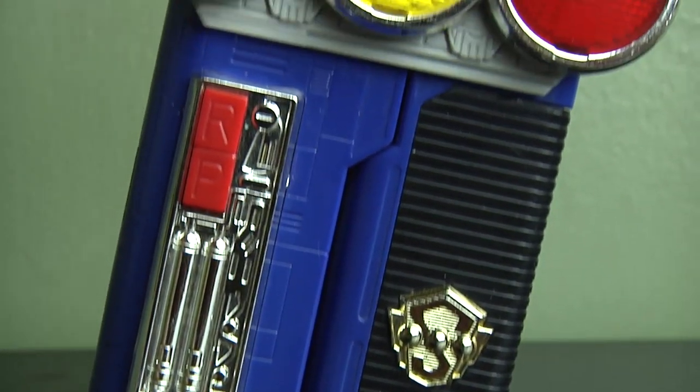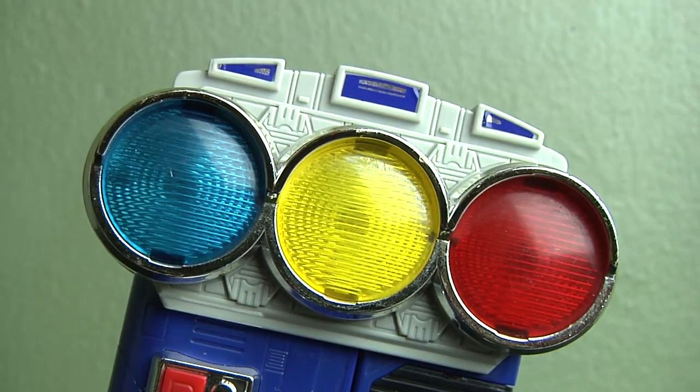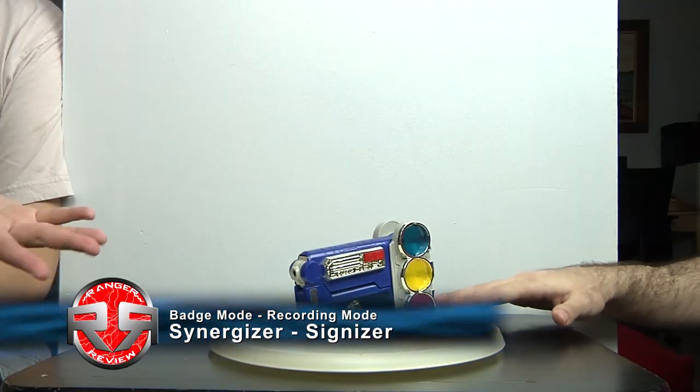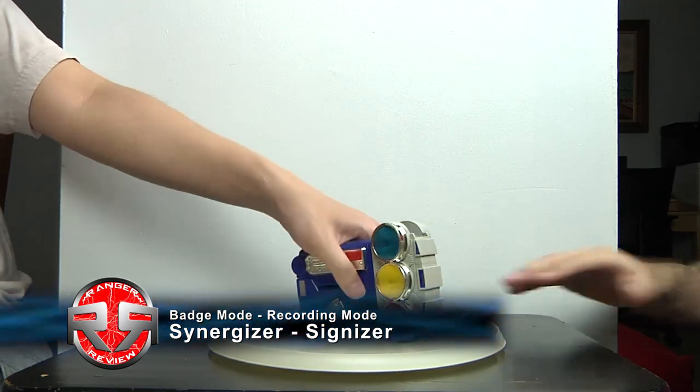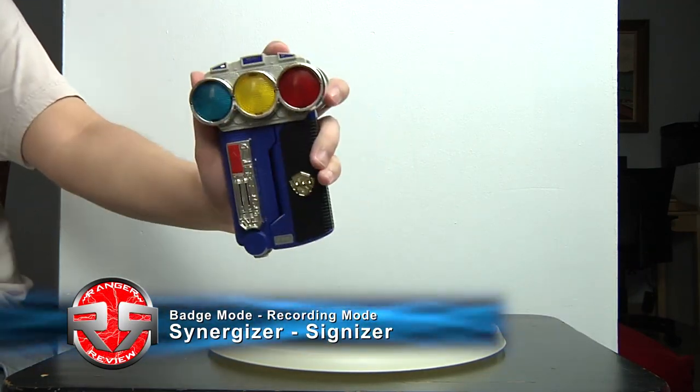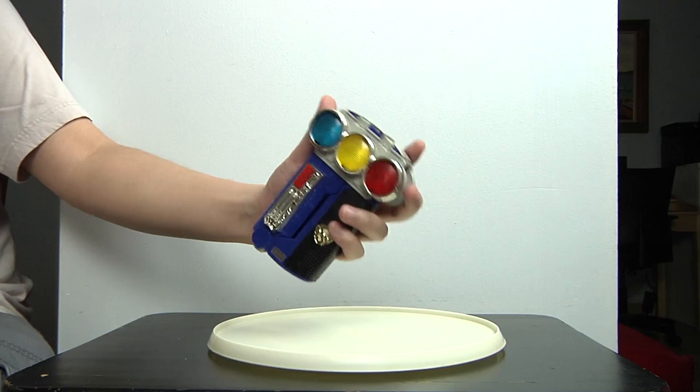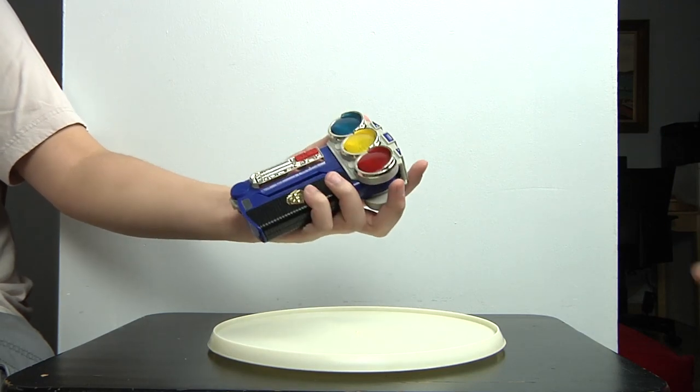Now we have the Blue Centurion badge, the Synergizer. It's really much just a little badge-like. This is it in the badge mode, which is when he comes out and says halt, you know, and whatnot. It flashes the same stoplights - red, yellow, green.